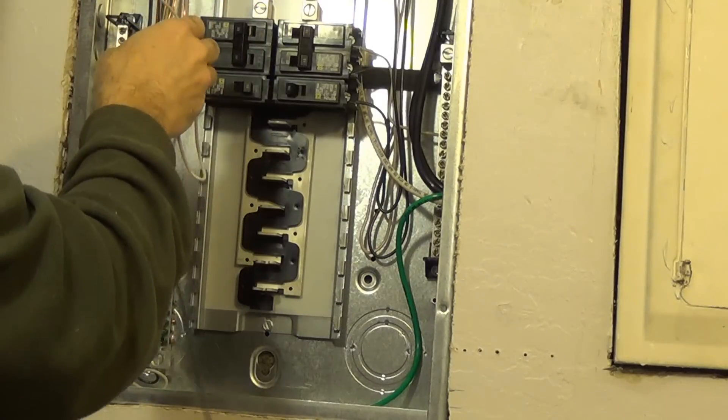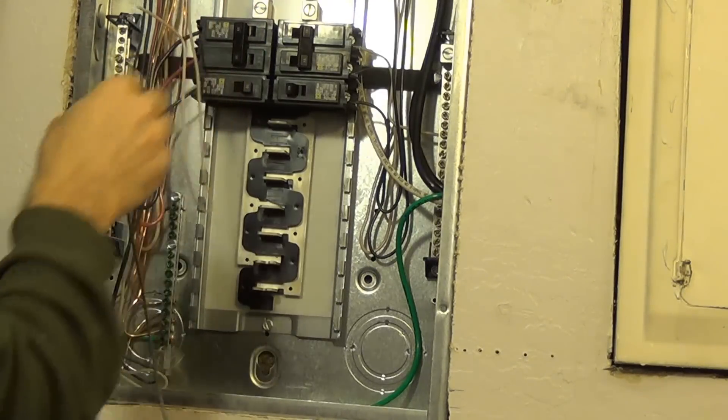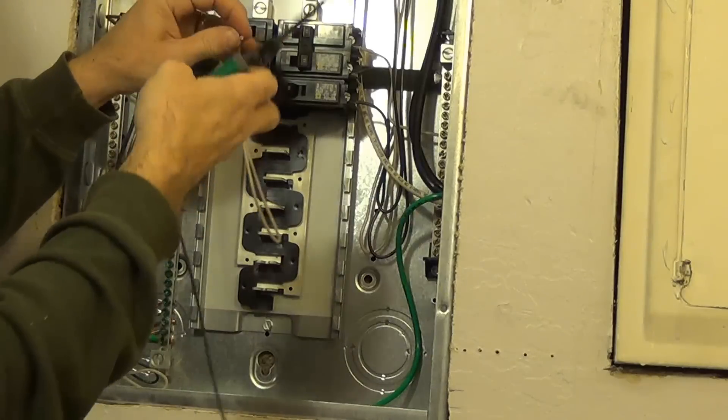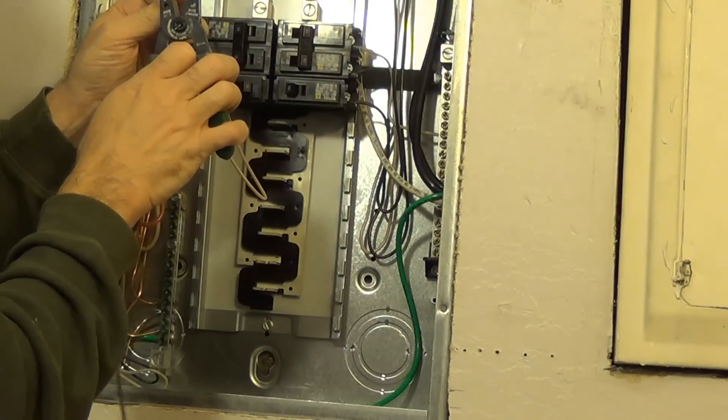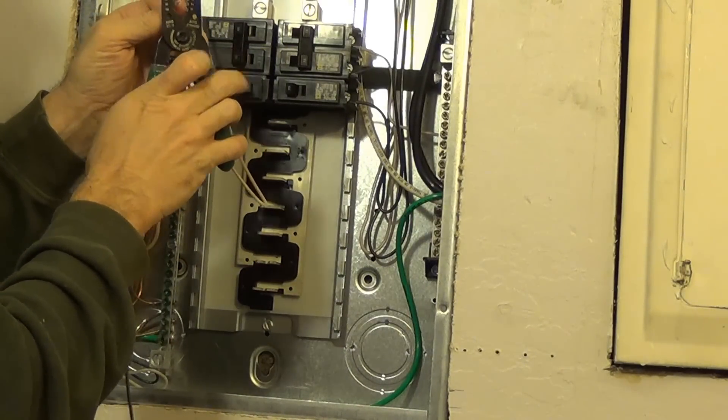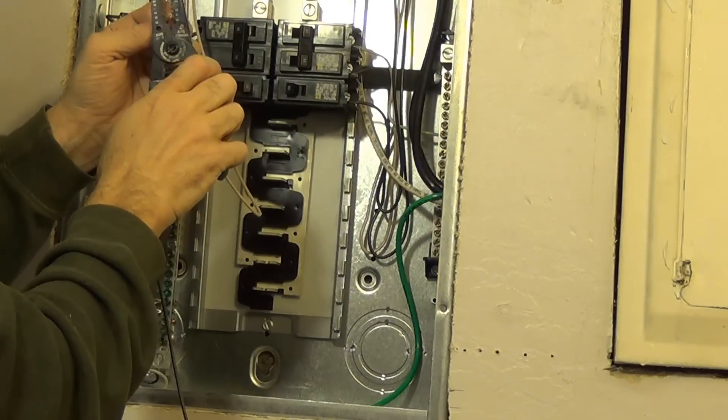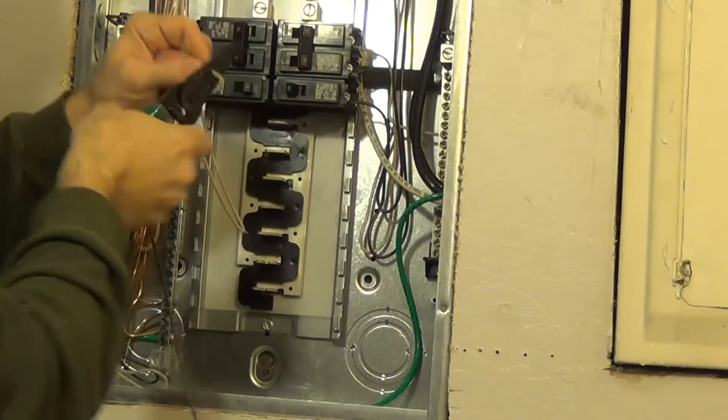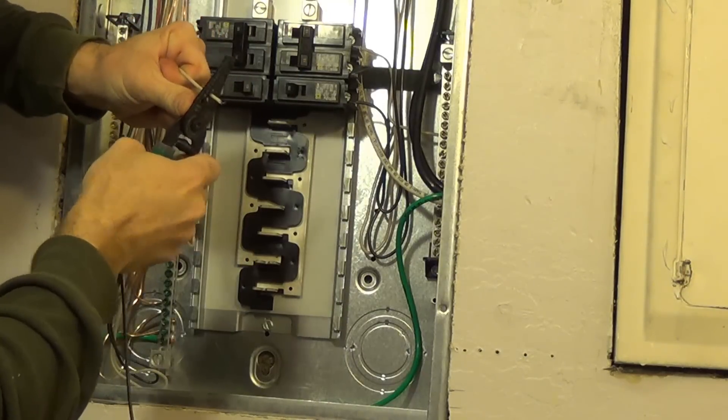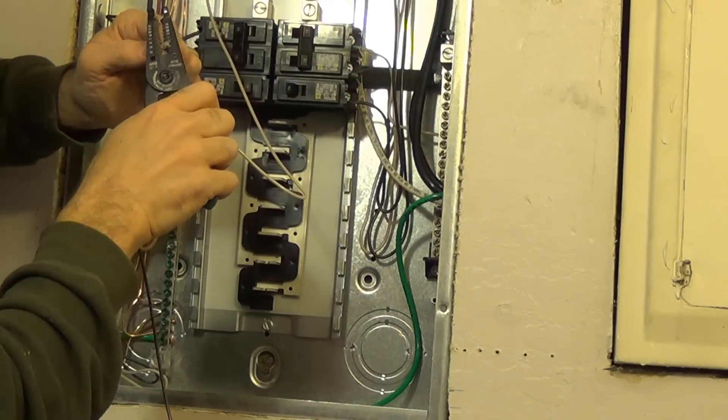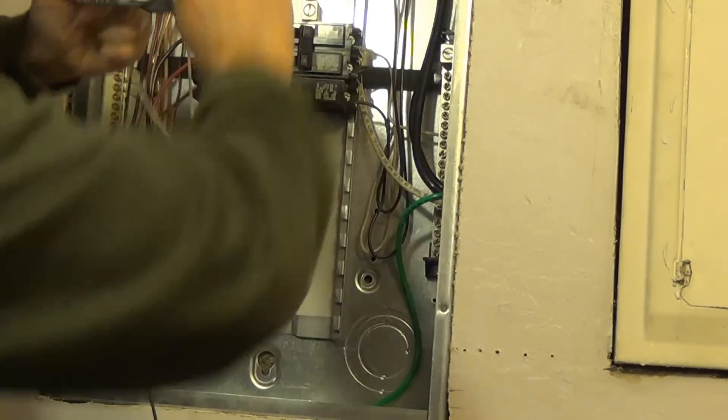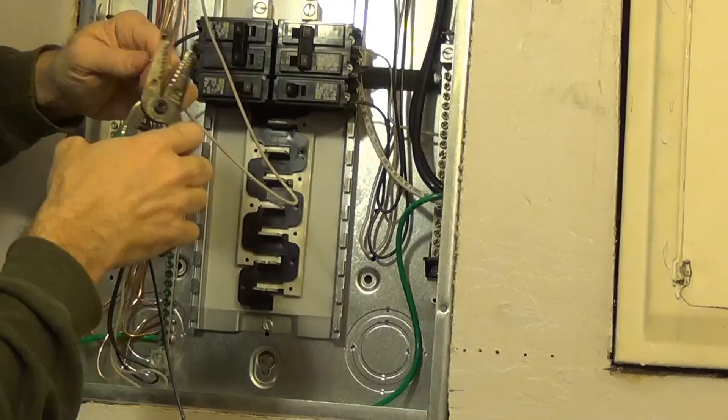Next is the white wire, so we'll go ahead and strip off about a half an inch from the tip. Expose about a half inch of wire, just like that.